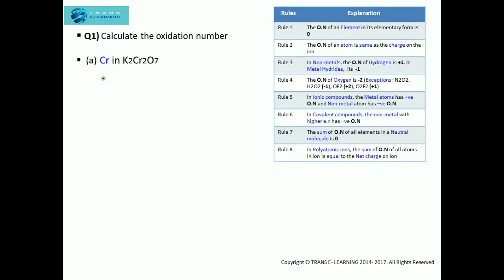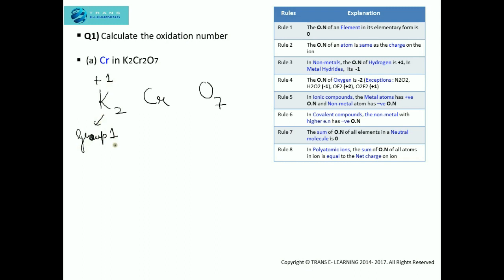Calculate the oxidation number of chromium in potassium dichromate. You can see here I've written the rules; along with the rules we need to follow the steps. As per step one, we need to write the oxidation number of the individual elements of the compound. The oxidation number of potassium will be plus one because it is a group one element, an alkali metal. We will take the oxidation number of chromium as x, and the oxidation number of oxygen will be minus two, as per rule four.